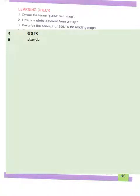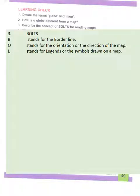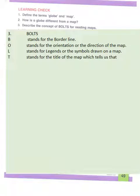B stands for the borderline. O stands for the orientation or the direction of the map. L stands for the legend or the symbols drawn on a map. T stands for the title of the map, which tells us what this map is about.